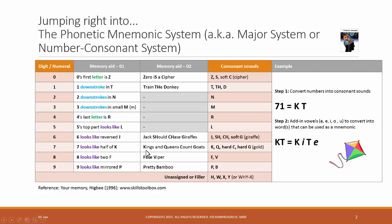For 7, it's kings and queens count goats. So we have got K, Q, C, G. For digit 8, we have fake viper. So we have F and V. And for digit 9, pretty bamboo P and B.